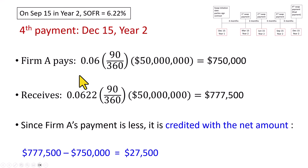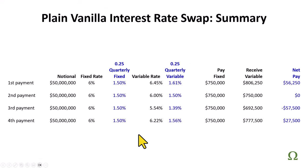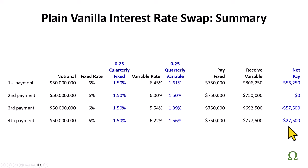In the final settlement period, SOFR turns out to be 6.22%, and since Firm A's payment is less, it is credited with a net amount of $27,500. So to summarize: first payment, Firm A wins; second payment, it's a wash; third payment, Firm A loses; fourth payment, Firm A wins. The wins and losses here are contextual — remember, the motivation is to match the variability of cash inflows with the variability of cash outflows and vice versa.